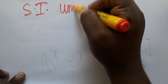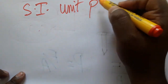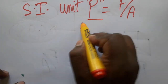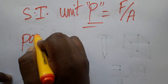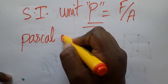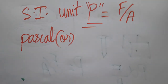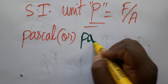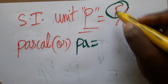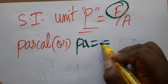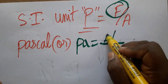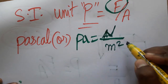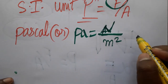The SI unit of pressure — since pressure equals force per unit area — is called the Pascal, represented as Pa. Force has the unit Newton, and area is meter squared (length × breadth). So pressure in SI is Newton per meter squared.